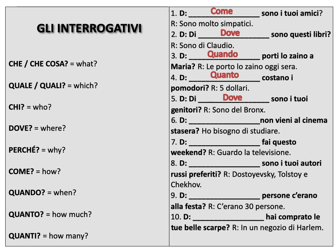Numero sei. Blank, non vieni al cinema stasera? — Ho bisogno di studiare. Blank, you don't come to the movies this evening — I need to study. Remember this expression with avere? Avere bisogno — ho bisogno di studiare means I need to study. So they're asking why you don't come to the movies this evening. Perché. Notice again the accent on perché.